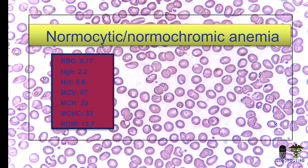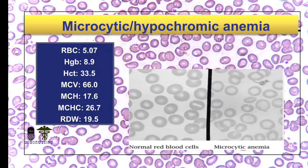This is an example of normocytic and normochromic anemia. It is normocytic and normochromic because the MCV and MCHC values are within range. But it is still anemia because the HB is below the normal range — that is why it is called an anemic condition. Another example shows microcytic and hypochromic anemia, where one can see the normal blood count alongside the microcytic picture.